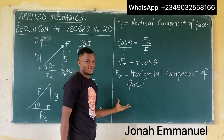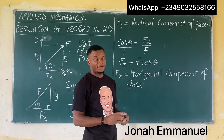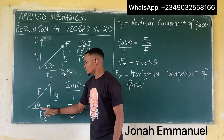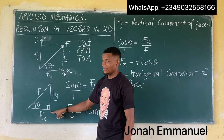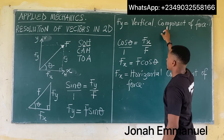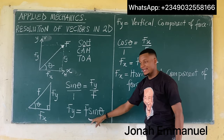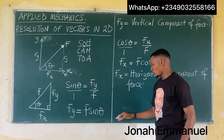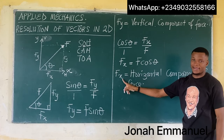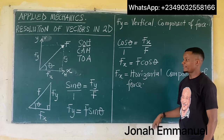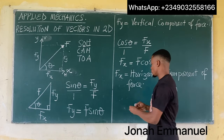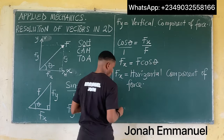Here's what you need to know: if a force or any vector is inclined at an angle theta to the horizontal, then the vertical component Fy is given by F sine theta, and the horizontal component Fx is given by F cosine theta. Now let's look at a second scenario.